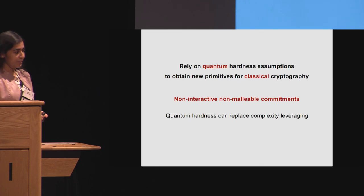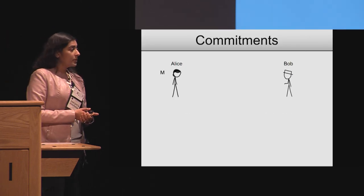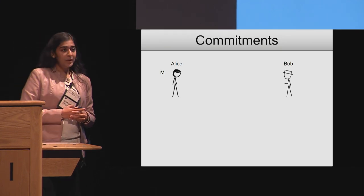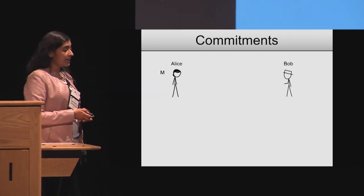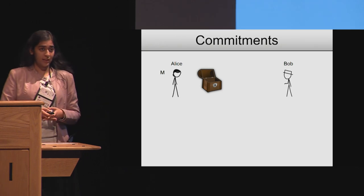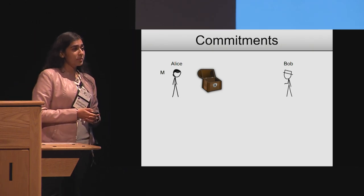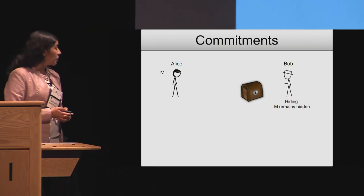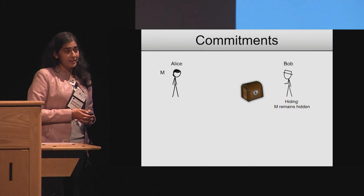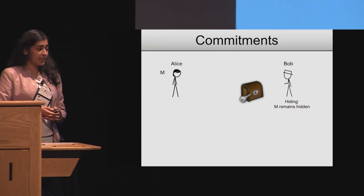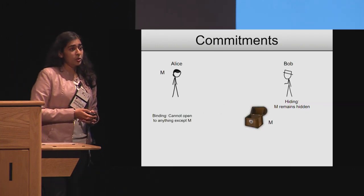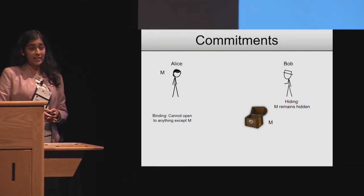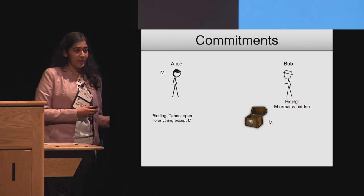Focusing on non-interactive, non-malleable commitments, let me start by quickly recalling what a commitment is. A commitment is a primitive that allows Alice, who has a secret input M, to put this input in a box, lock the box, and send it over to Bob. The requirement is that this box should not reveal the message M, unless Alice provides a key in the future that allows Bob to check that the message inside this box was indeed M. And we require that, at this later point, Alice shouldn't be able to change her mind about the message in the box.